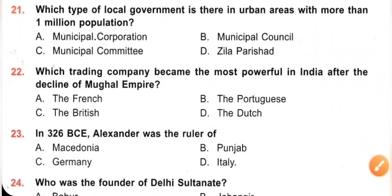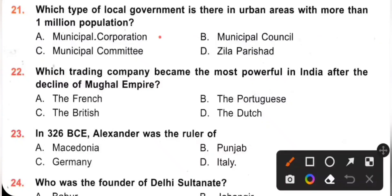Question 21: Which type of local government is there in urban areas with more than 1 million population? A. Municipal Corporation. B. Municipal Council. C. Municipal Committee. D. Zilla Parishad. So option A, Municipal Corporation, is the type of local government in urban areas with more than 1 million population. Option A is the correct answer.